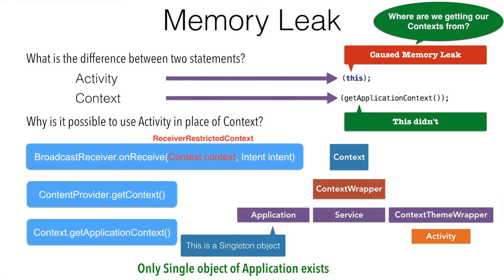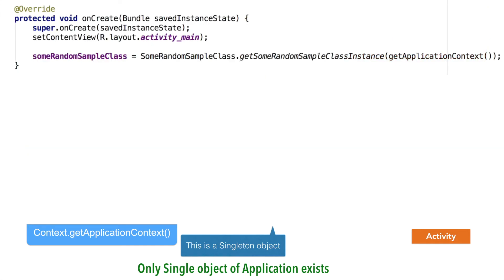This might give you a clue as to why using getApplicationContext didn't result in memory leak. Because you are not getting new instances of the application context. You are getting one and the same. That is why it was not causing the memory leak.